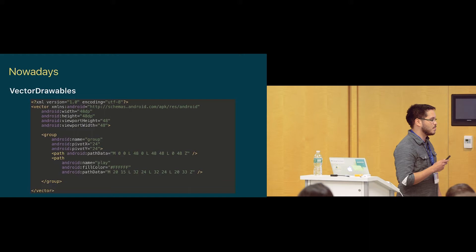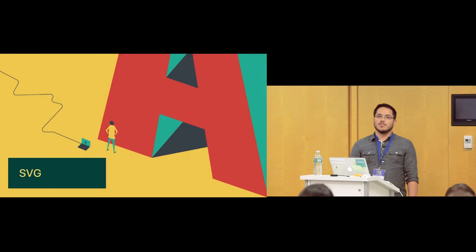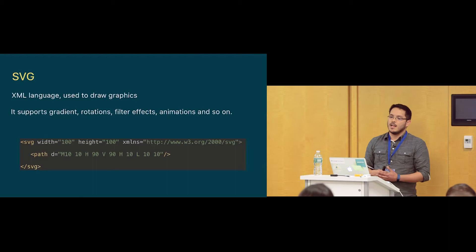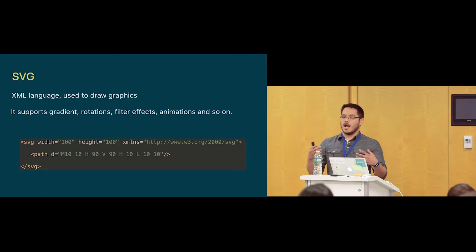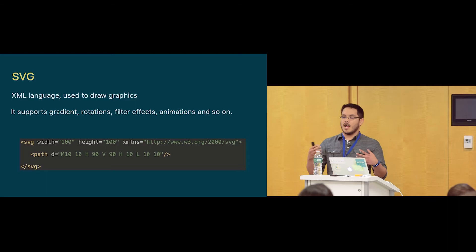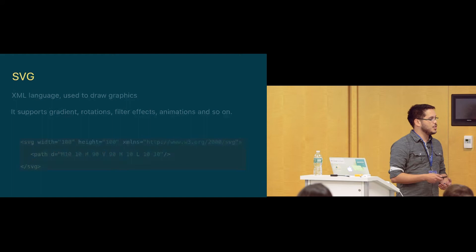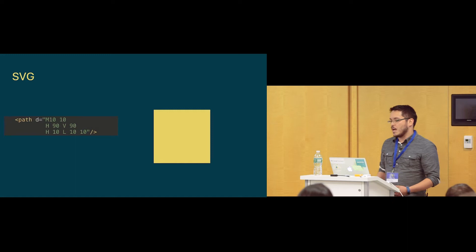Before we get to vector drawables, I want to talk a little about SVG — what it's for and how it works. It's an XML language used to draw graphics. It supports gradient, rotation, filter effects, animation, and so on. Here's an example of a very simple SVG. If we pay attention to the path on this SVG, we can see that it actually draws a square.